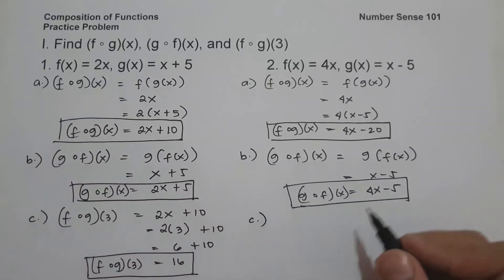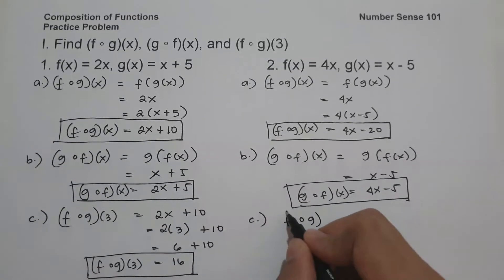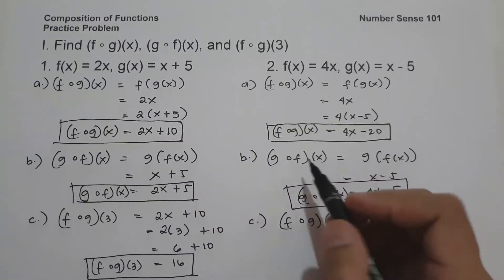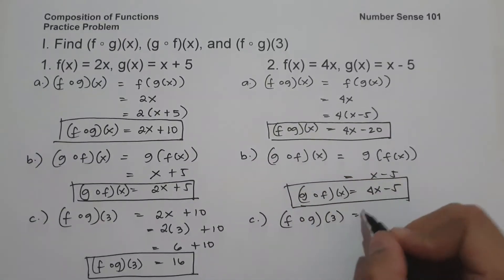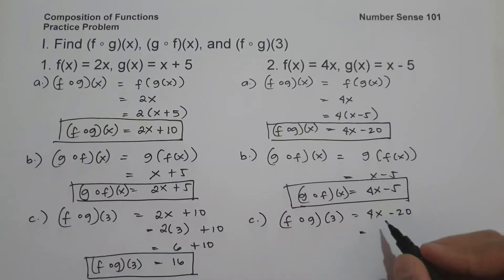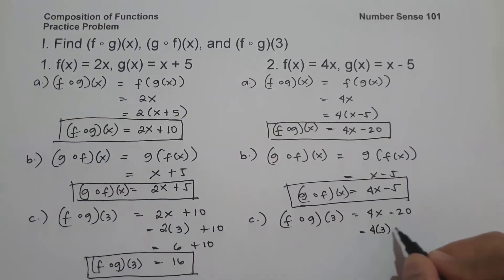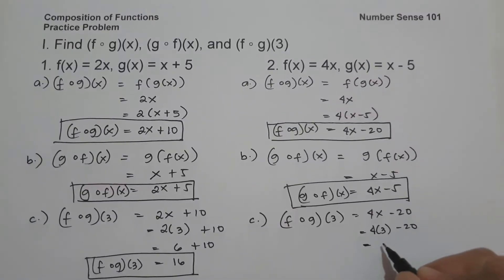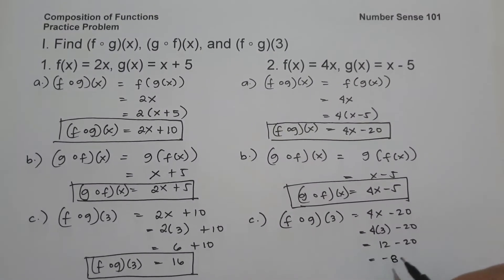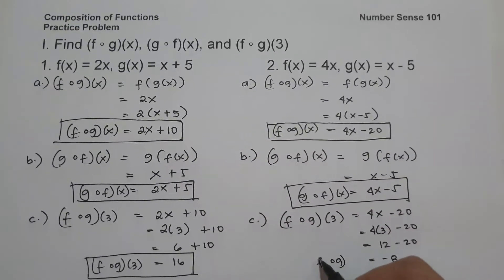On letter c, we have f circle of g of 3. Since f circle of g of x is 4x minus 20, we substitute x equals 3. So this will be 4 times 3 minus 20. That is 12 minus 20, which is negative 8. So this will be the value of f circle of g of 3, and this will be our answer.